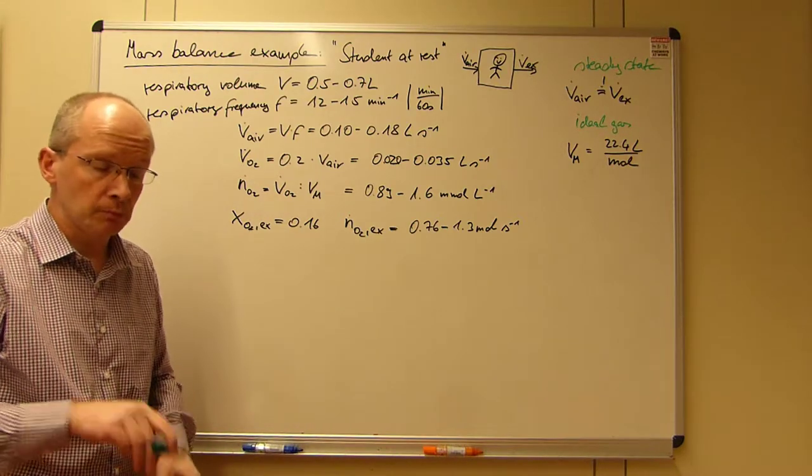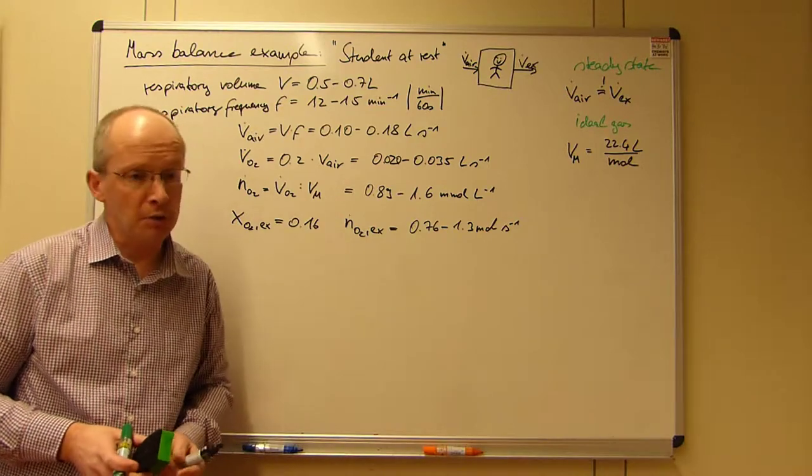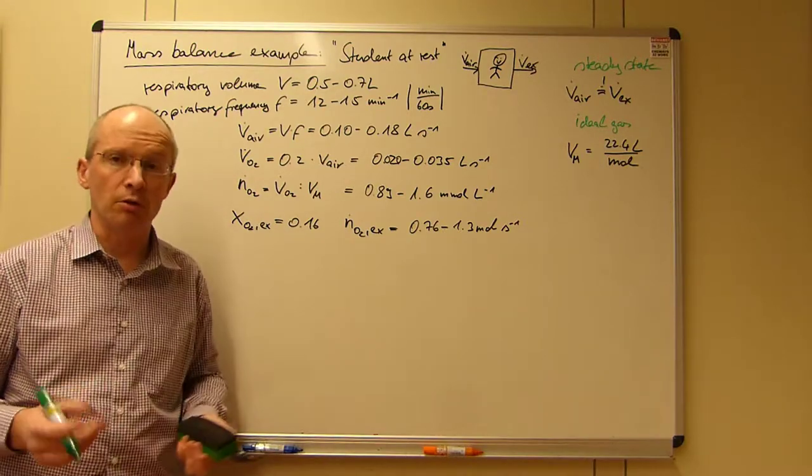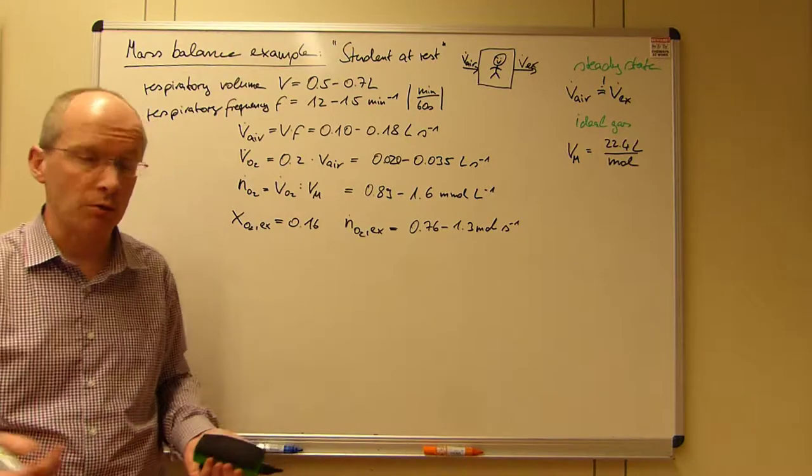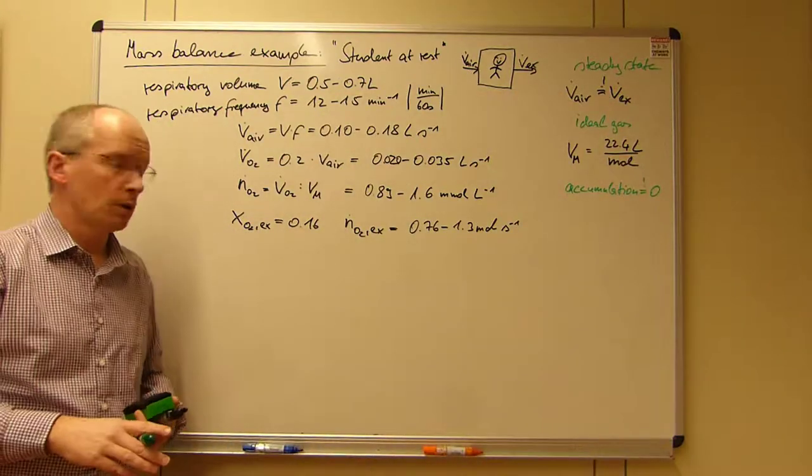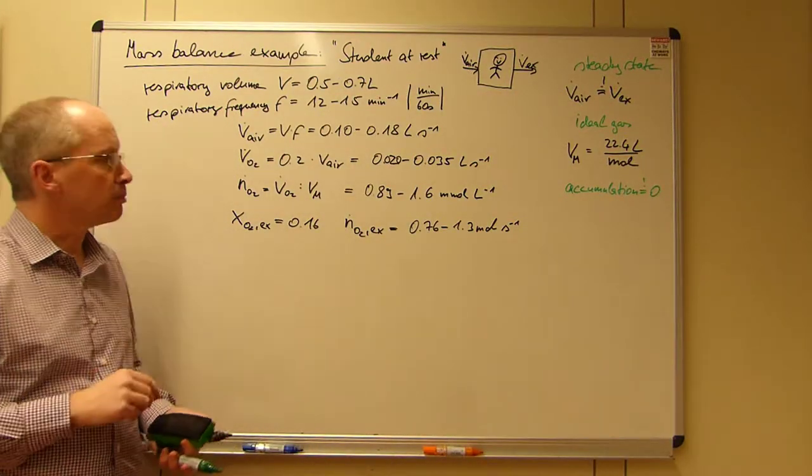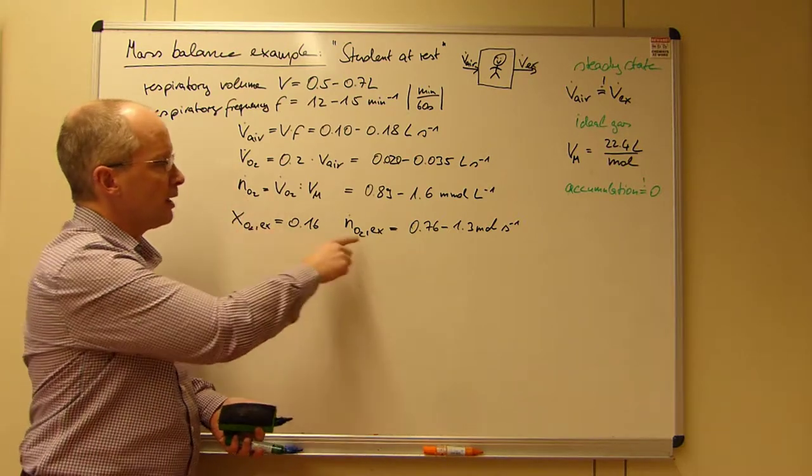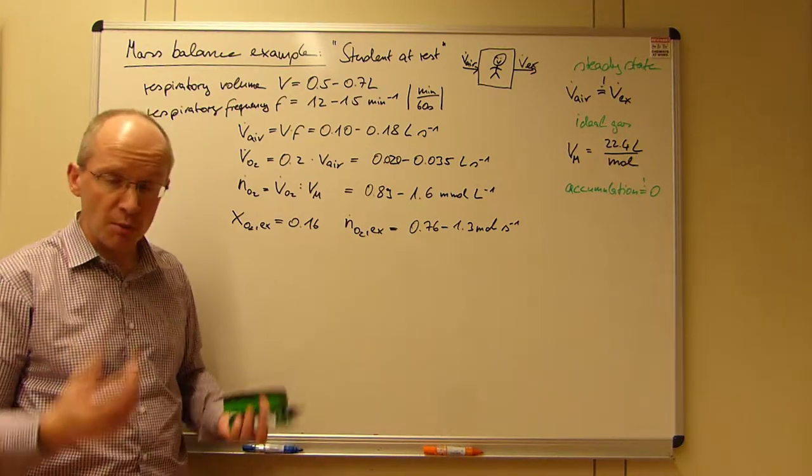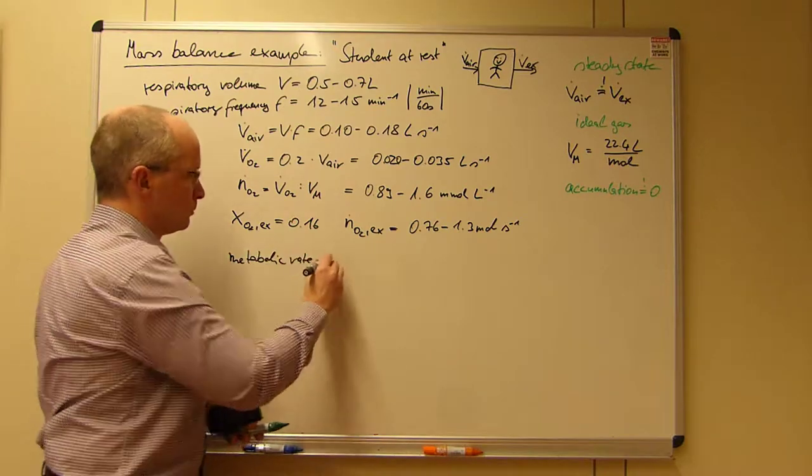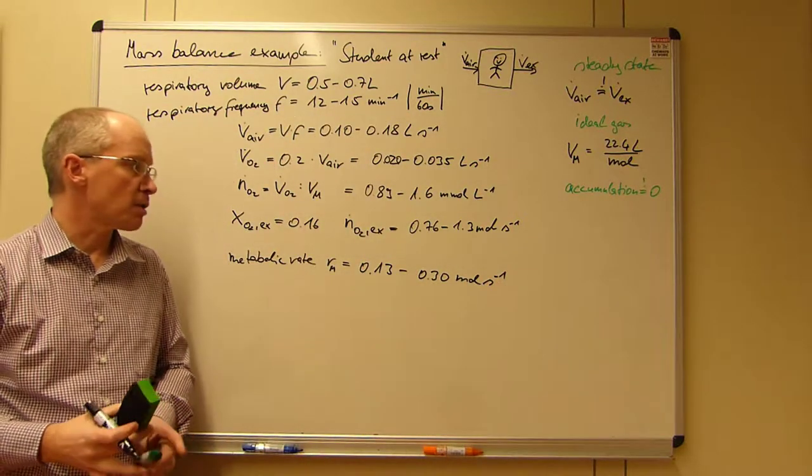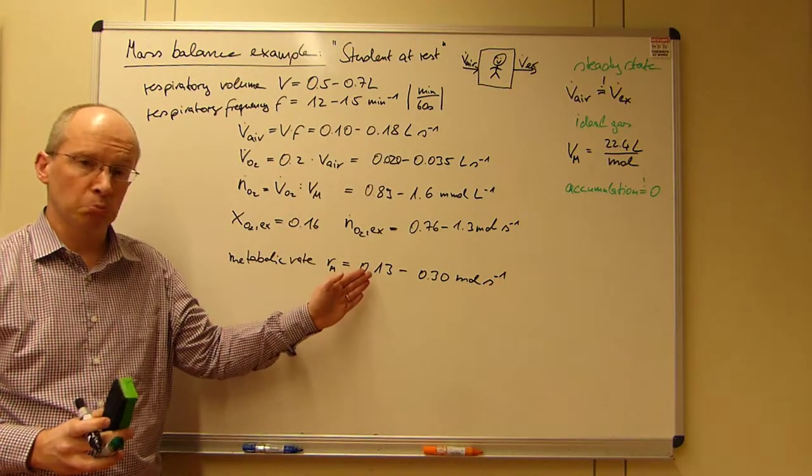We make a further assumption, as I hopefully didn't have too much of a dinner or something. So we assume that the buildup of biomass in our student is zero, which equals to accumulation to be zero. Then the difference between the intake and the exhaled oxygen stream must be what the reaction actually takes place. So this is the metabolic rate.